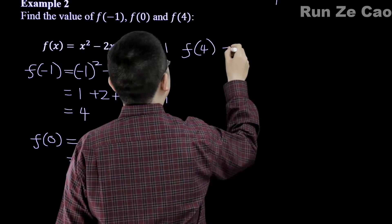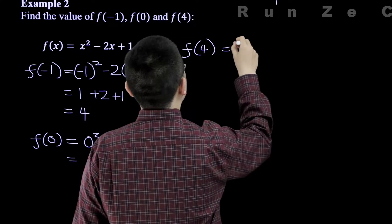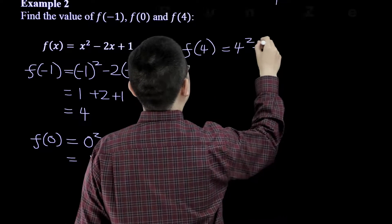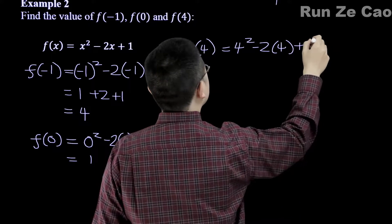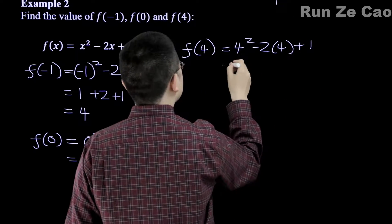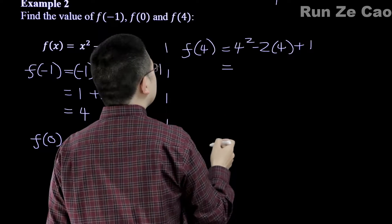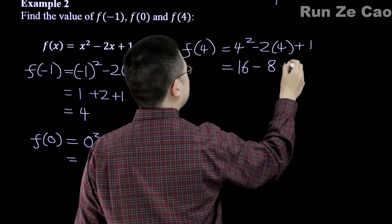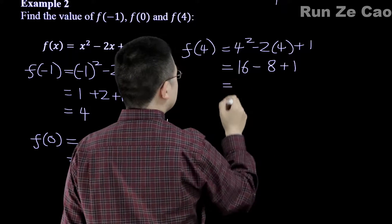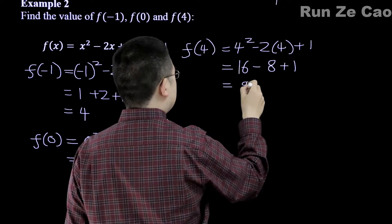Of course, regional conventions may vary. So this is equal to 4 squared minus 2 times 4 plus 1. So this is equal to 16 minus 8 plus 1 equals 9.